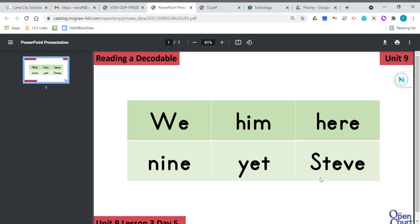And then this is the title of our book, and it's also our character's name. S-T-E-V-E, Steve. So on the second row, nine, yet, Steve. Let's read all the words. We, him, here, nine, yet, Steve.